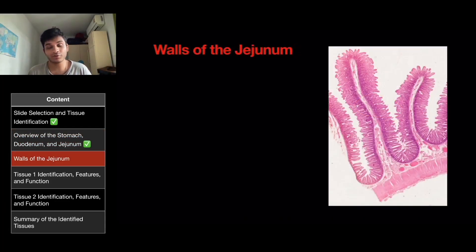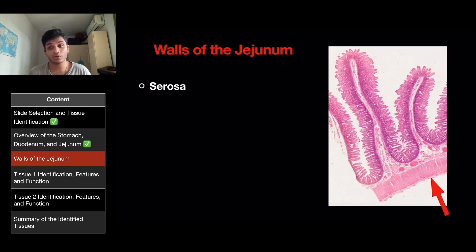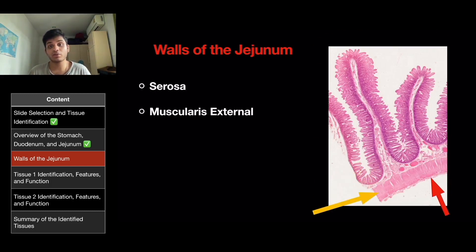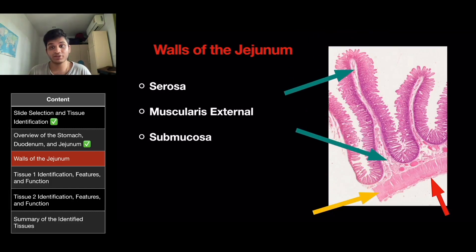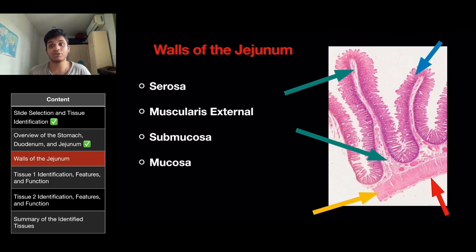Now let's talk about the walls of the jejunum. The jejunum has four walls: the serosa (red arrow), the muscularis externa (yellow arrow), the submucosa (green arrow), and the mucosa (blue arrow).